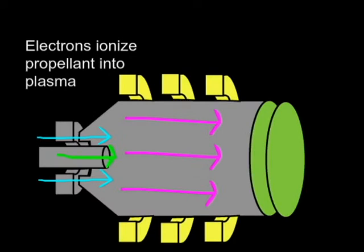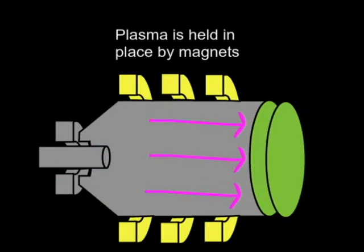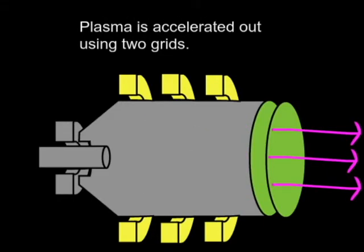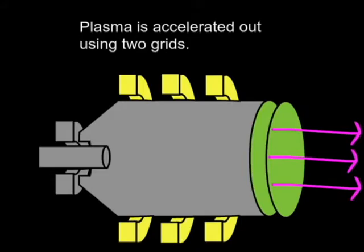Electrostatic propulsion was the very first of its kind. The drive works by using electrons represented in green to ionize propellant represented in blue. This creates a plasma, which is represented in purple. The plasma is then held in place by magnets and accelerated out using two grids, one with a positive and one with a negative charge. Finally, electrons are inserted into the exhaust to prevent the ship from getting a negative charge.